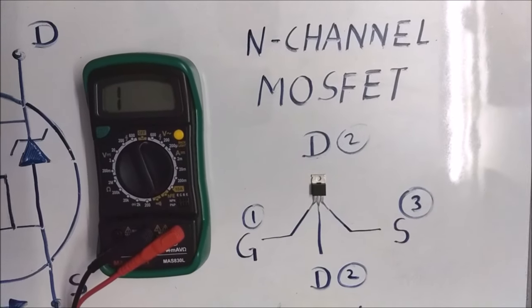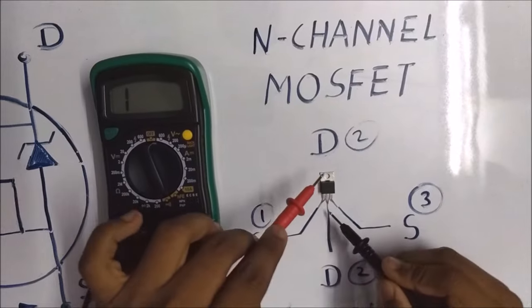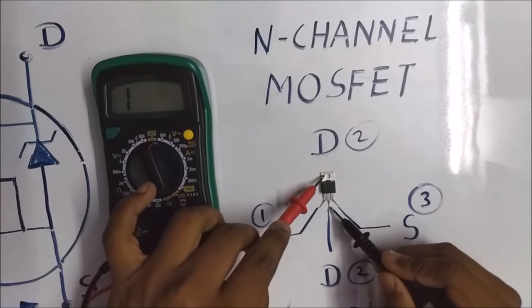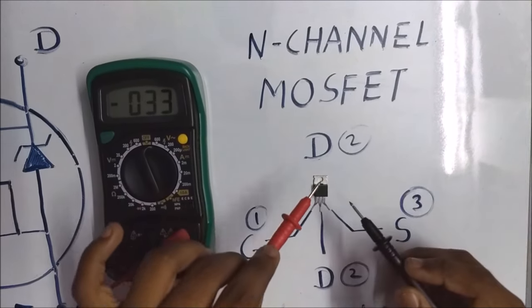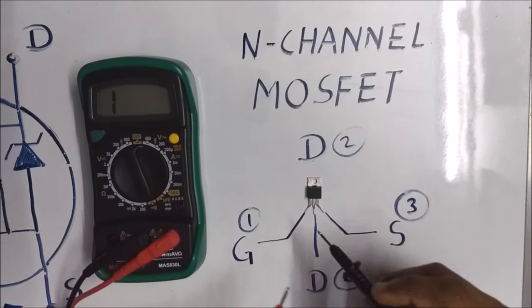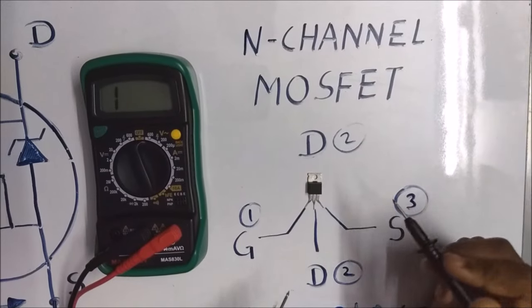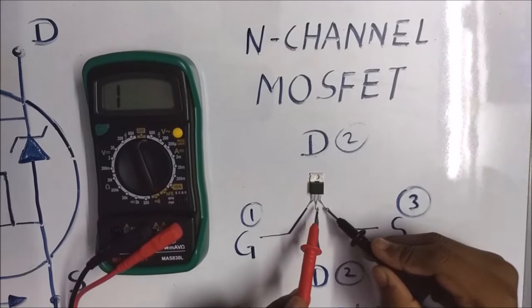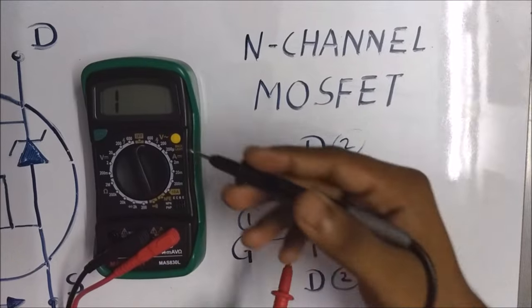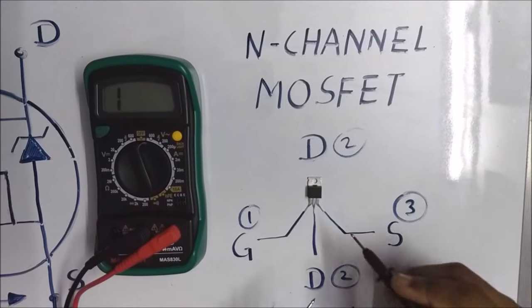So let's check. As you can see both the terminals are shorted or not. There is no value shown. That means drain and source terminals are not connected.